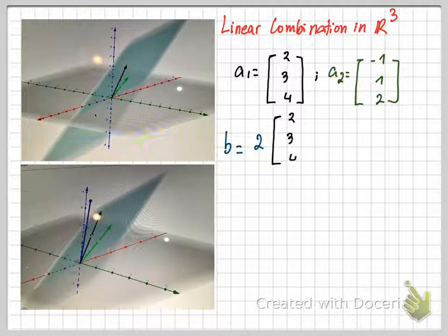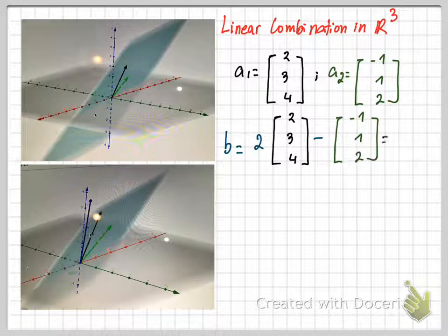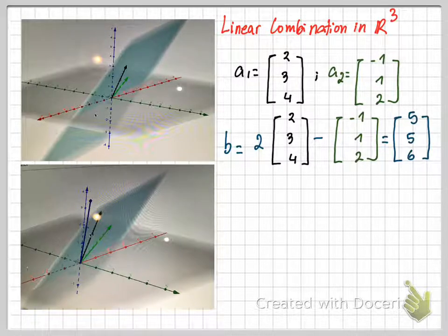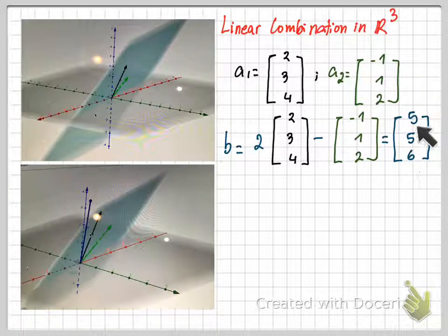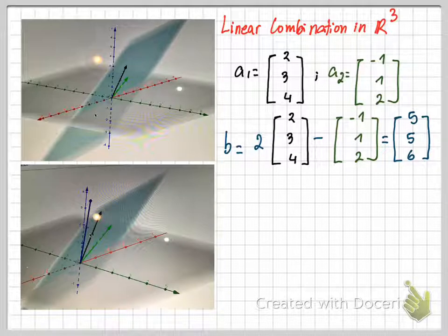If you multiply the black vector by 2 and subtract the green vector, you get a new vector B in R³ with coordinates [5,5,6].